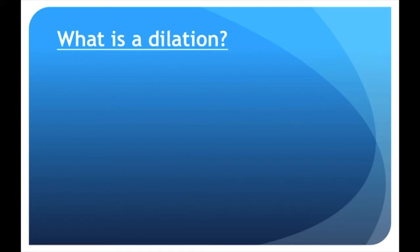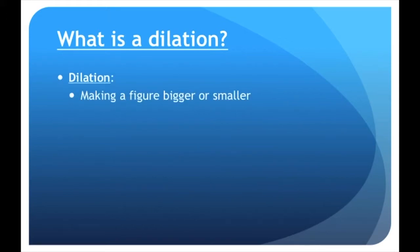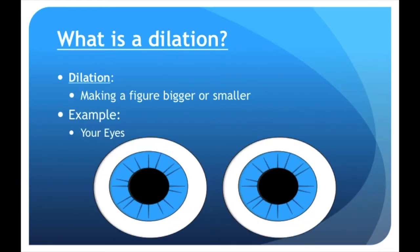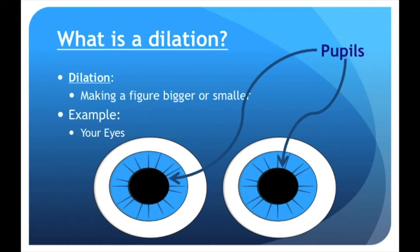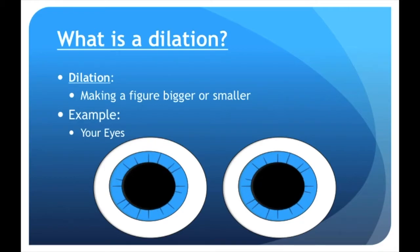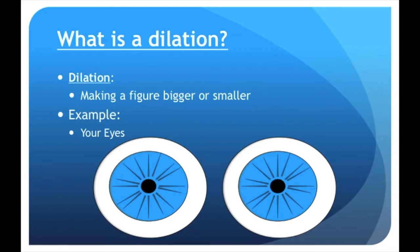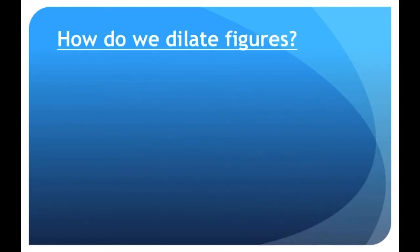So what exactly is a dilation? A dilation is when you make a figure bigger or smaller. You're not changing the shape itself, you're really just changing the size. For example, when you go to the doctor and they put light in your eyes, your pupils dilate — they get a little bit bigger or smaller. The more light that goes in your eyes, the smaller your pupils get, but it doesn't change shape. Your pupils stay circles but they just get smaller. So a dilation is when we are changing a shape's size but not the shape itself.